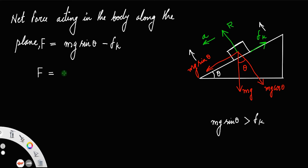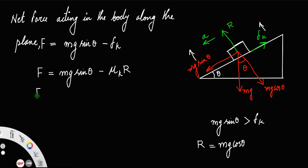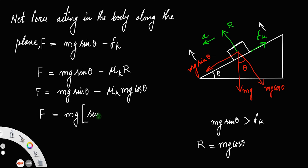F is equal to mg sin theta minus the frictional force, where frictional force is mu_k times the normal reaction R. Considering vertical equilibrium, R is equal to mg cos theta. So F is equal to mg sin theta minus mu_k times mg cos theta, or F is equal to mg times (sin theta minus mu_k cos theta).